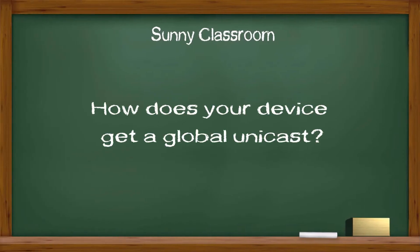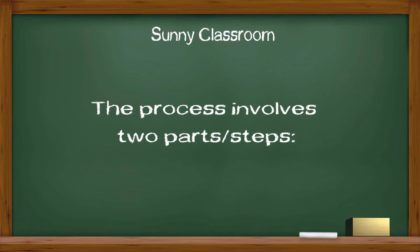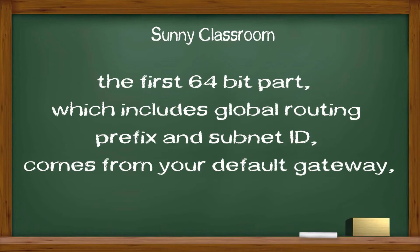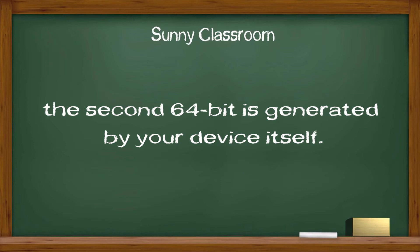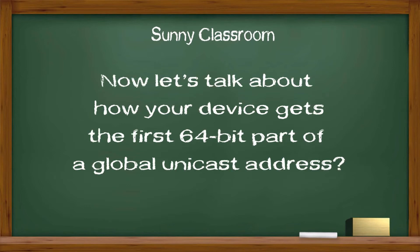How does your device get a global unicast? The process involves two parts. The first 64-bit part, which encloses the global routing prefix and subnet ID, comes from your default gateway. The second 64-bit is generated by your device itself. Now let's talk about how your device gets the first 64-bit part of a global unicast address.